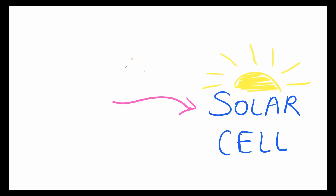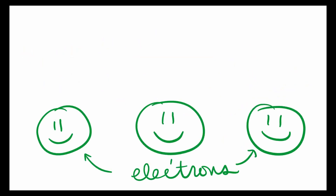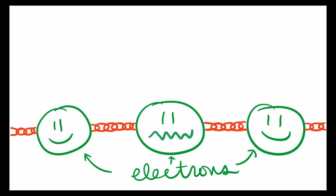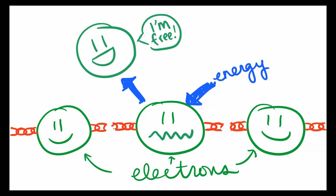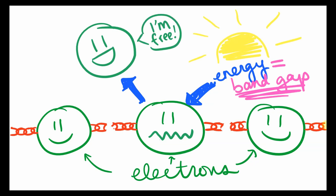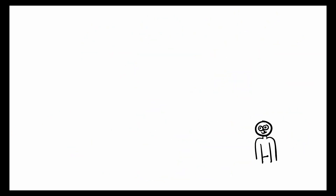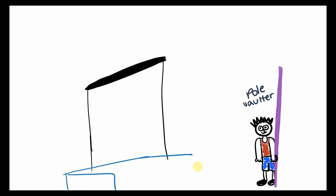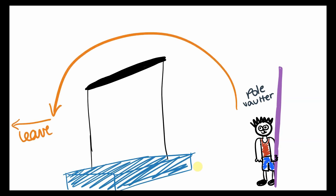Now, how are we going to do that? We're going to need to borrow the electrons from the solid so they can power our device. But there's a problem — the electrons are strongly bonded and they'd really rather not leave the solid. So we're going to have to give them some extra energy so they can leave. That energy is going to come from the sun, and it's called the band gap. Let's say an electron is a pole vaulter — it needs to get over the bar to leave the solid, and the height of the bar is called the band gap.